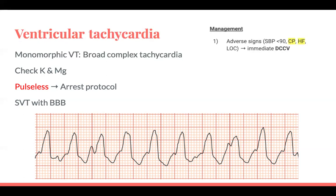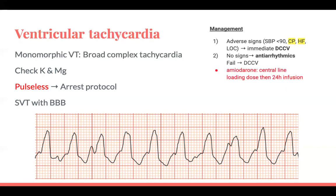Management of VT: adverse signs indicating DC cardioversion include haemodynamic instability, low blood pressure, chest pain suggesting concurrent MI, heart failure, or loss of consciousness. If none of those adverse signs are present, try antiarrhythmics — first line is amiodarone, which requires a central line for the loading dose followed by a 24-hour infusion. Lidocaine can be tried if amiodarone fails, though it's often unsuccessful, and is contraindicated in severe heart failure. If refractory, the patient will likely need electrophysiology assessment and an ICD.